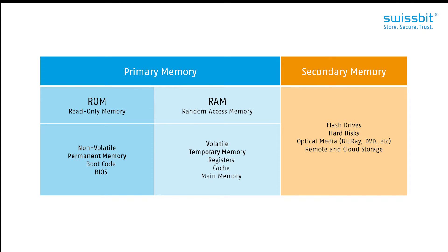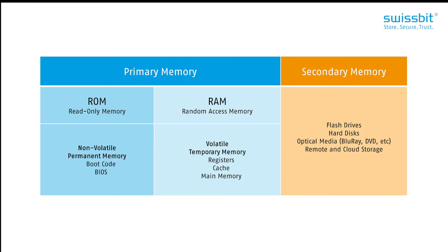Primary memory consists of either ROM, read-only memory, which is non-volatile, or RAM, random access memory, which is volatile. The difference is their capabilities to store data even when there is no power. ROM is by nature read-only, which means it's permanent and very fast. Its non-volatile nature ensures data remains stored even when there is no power. The ROM is often where bootcode and BIOS are stored.